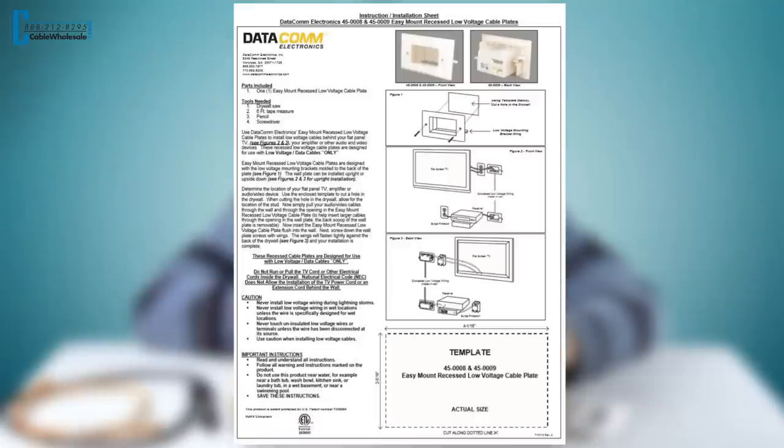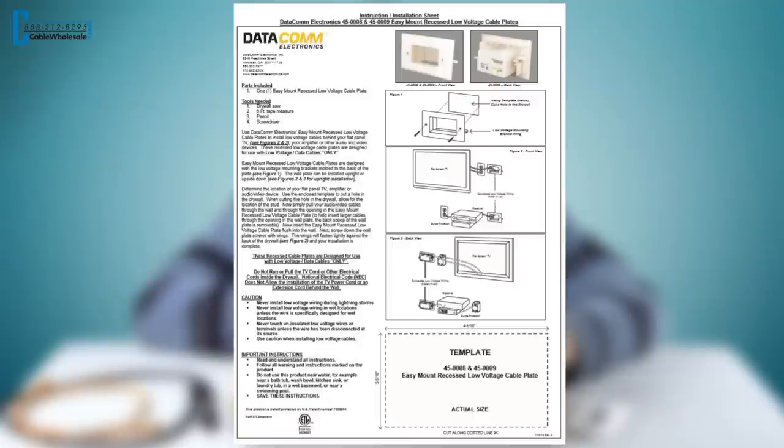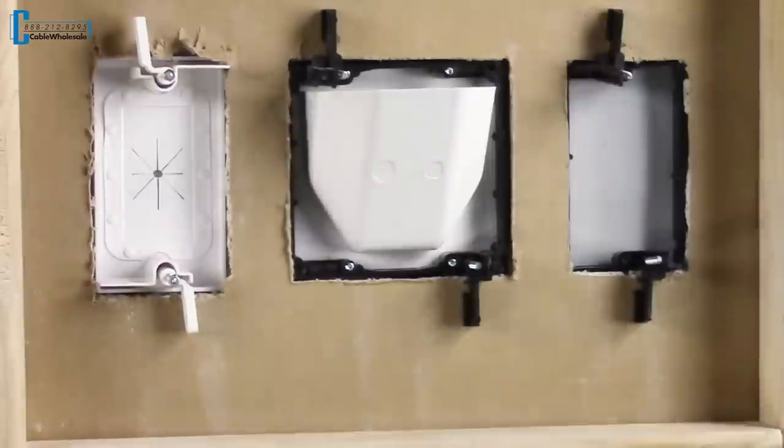The instructions come with a template, so you can easily cut out the hole in the wall. Once you screw down the plates, the wings come down and hold it into place.